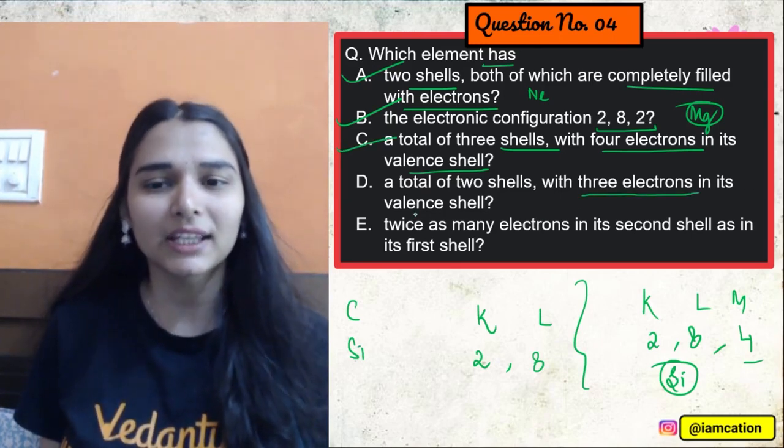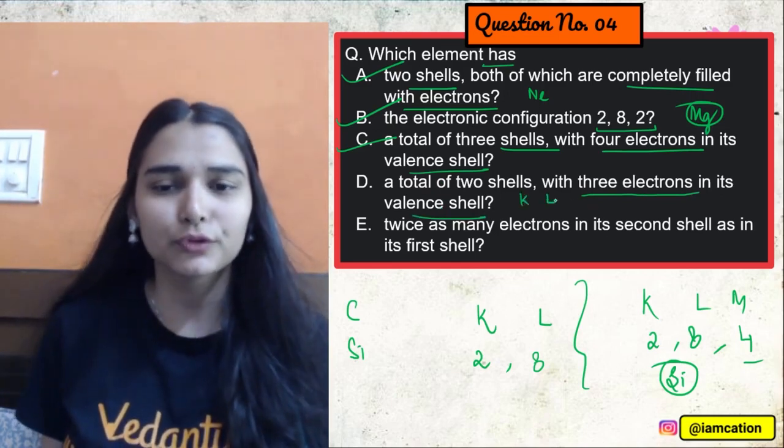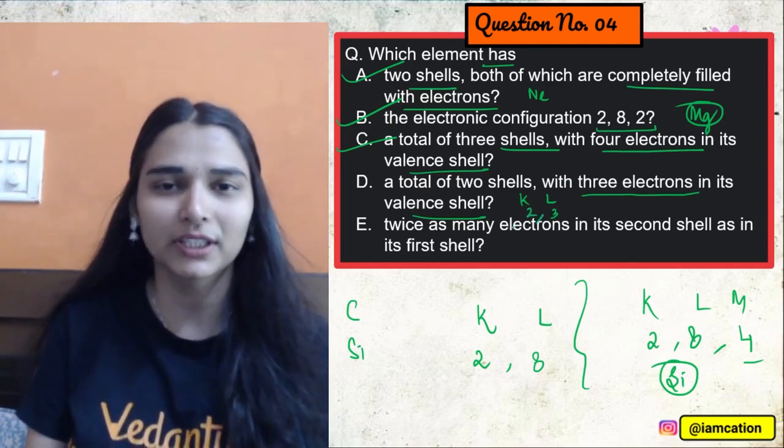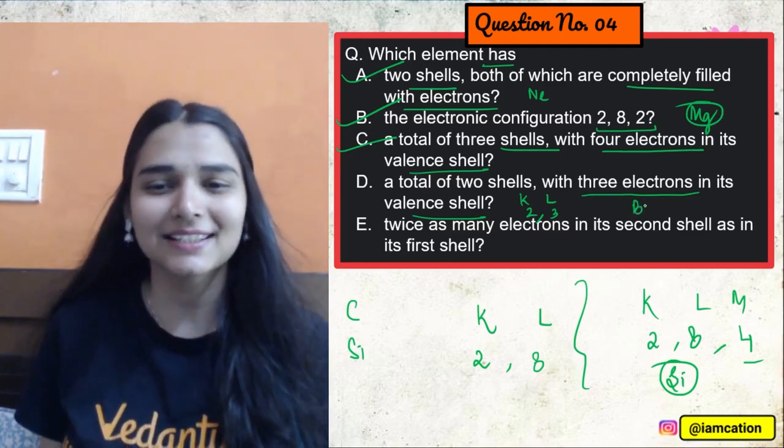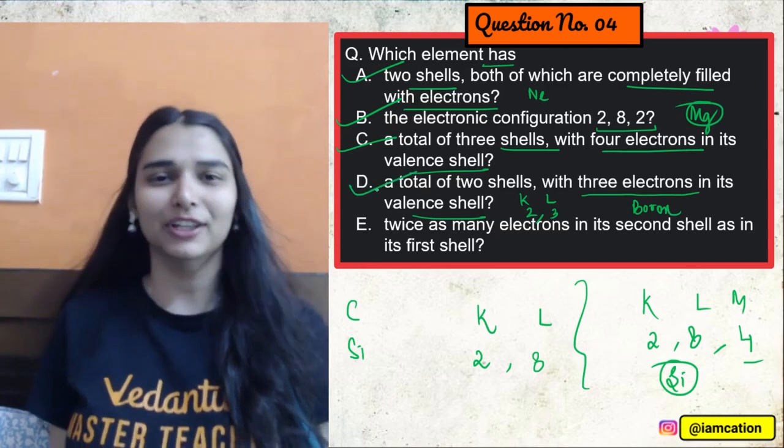Total of two shells with three electrons in its valence shell. K, L. Total of two shells, three electrons in the valence shell. Two, three. Kaun hai? Atomic number 5. Boron. Kar sakte ho. Super awesome. These questions are easy and they can also come in your exam.